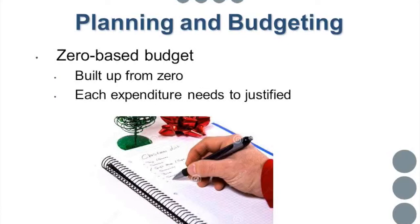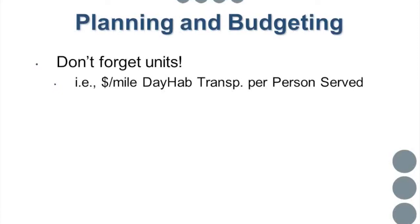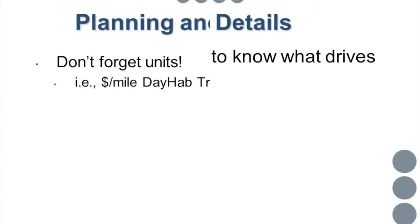Compare that to a zero-based budget, where you start with nothing and plan everything from scratch. Think of your Christmas list: do you say 'what did I spend last year plus 4%,' or do you say 'give me your list, I'll price it, and figure out what I can afford'? If I don't have enough money, I'll start crossing things off — tell me which you want most and I'll get those first. In a zero-based budget, each expenditure must be justified. This is the approach that lets you actually cross things off the list and reduce costs.